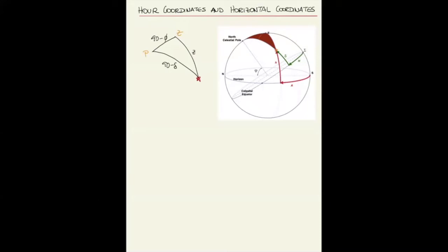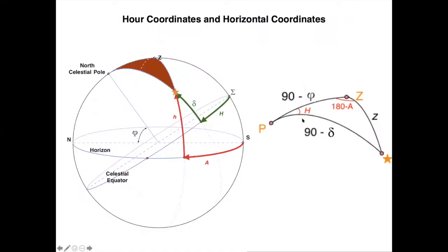So this is our triangle: the zenith, the pole, and the star. The other elements are the angles. This angle here is 180 minus A, where A is the azimuth — you can see clearly because from the south point to this point is the azimuth, and then the projection to the North point gives 180 minus A. In the same way, the other angle is the hour angle H.